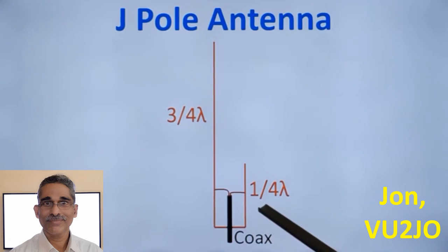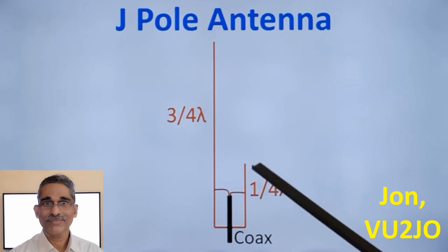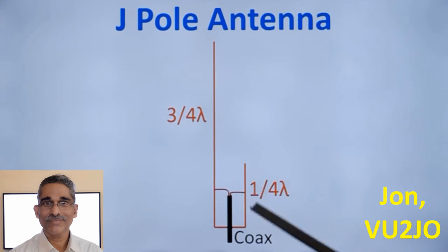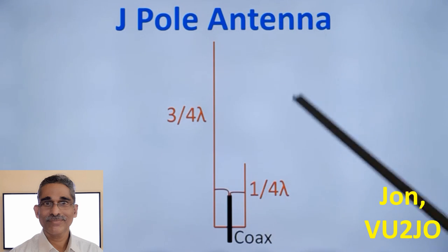End-fed antennas have high impedance and this requires matching. So this arrangement of the J pole is mainly for matching. You have connections from the coax on either side and the connection point has to be adjusted by sliding up and down to have the lowest SWR. That is how the J pole antenna is tuned.